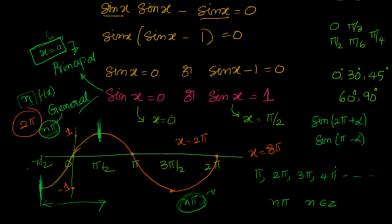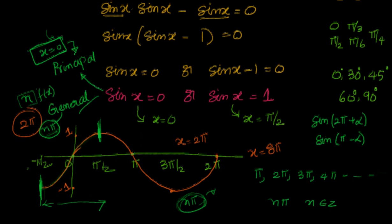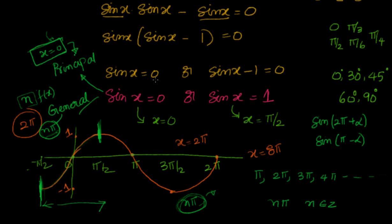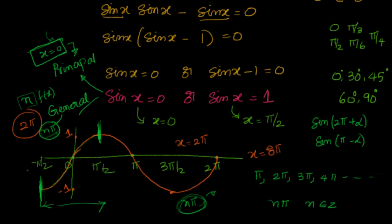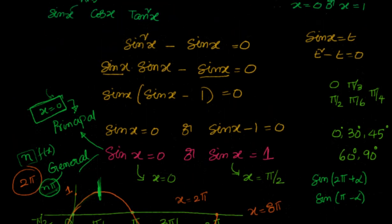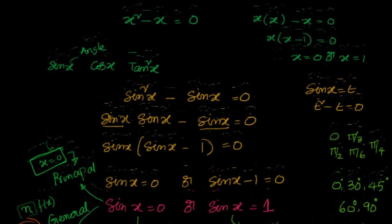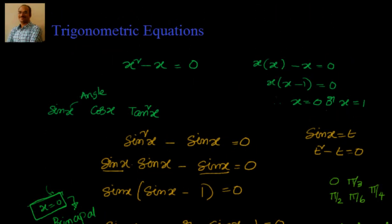That's about principal solution and general solution. In the next video, we will take sin x = 0, cos x = 0, and tan x = 0 and find their principal and general solutions. That's an introduction to trigonometric equations. Hope you liked it. Thanks for visiting. Bye for now, see you in the next video.